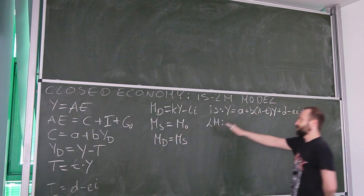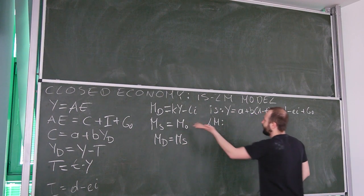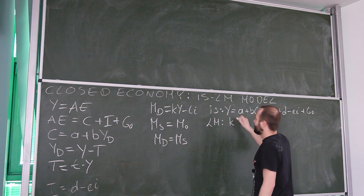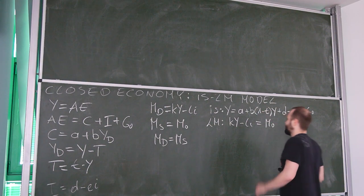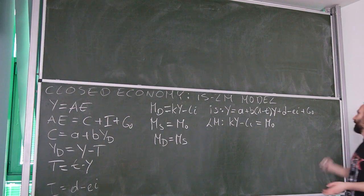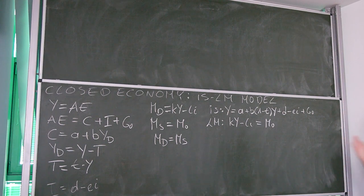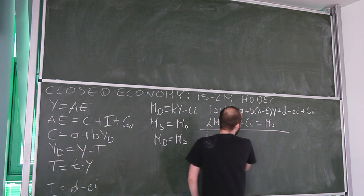We substitute the money demand and money supply expressions into the equilibrium condition and get: ky minus li equals M0. We put all endogenous variables on the left and exogenous variables on the right. In our case we consider two endogenous variables: income and interest rate.